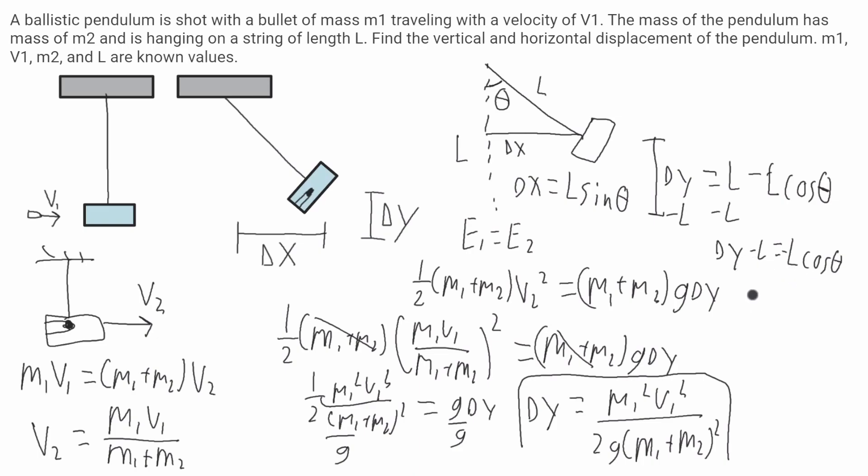I want to divide this negative L to both sides. I'll get cosine of theta is equal to L minus delta y over L.